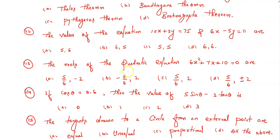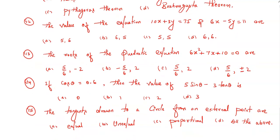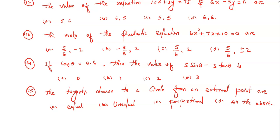Question number thirteen: the roots of the quadratic equation 6x² + 7x + 10 = 0 are—you have to select which among these four options is the correct answer.